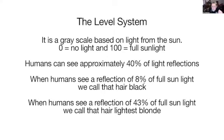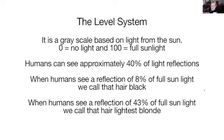When we see a reflection of about 43% of full sunlight, we can't look at it anymore because it's so bright that the retina of our eye will burn, and your eyes automatically close. So when we have 43% of sunlight reflecting back, that's what we refer to on hair as lightest blonde. The visual scale for us is between 8% and 43% of full sunlight.